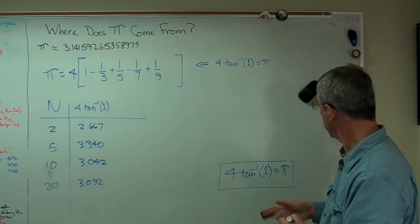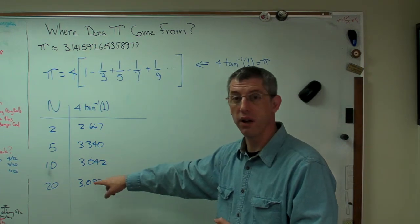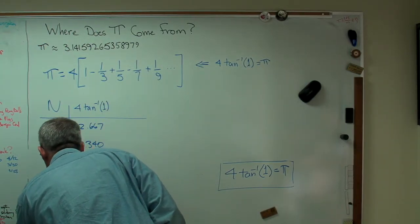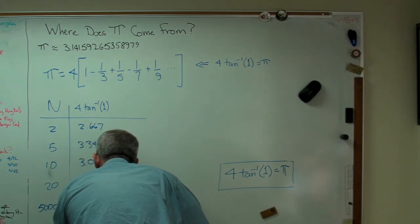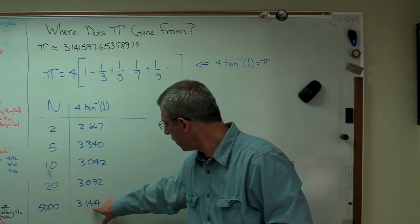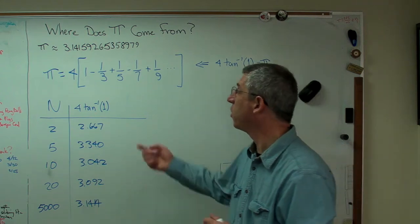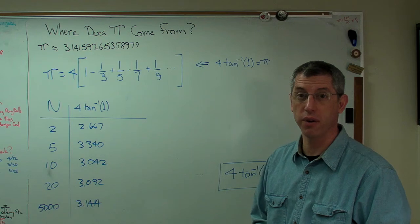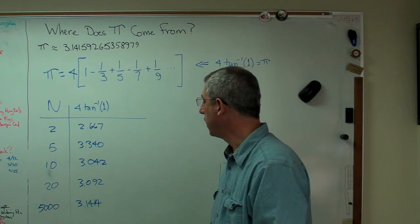This works, but it doesn't converge very quickly. It takes a lot of terms for this to get close. In fact, if you take 5,000 terms, you get 3.1414. The first four significant figures are correct, and the fifth one's not, but it's close. But that took 5,000 terms. That's a lot of handwork if you're doing this by hand. Now if you're doing this on a calculator or computer, who cares? Just hit return and that's what you get.